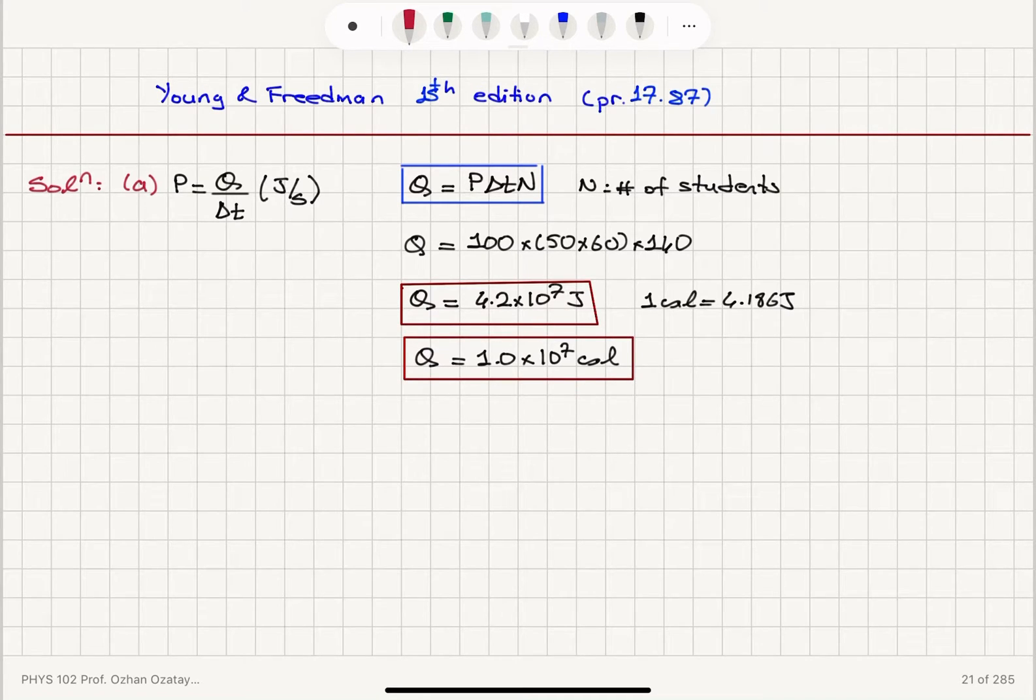In part B, we want to know how much of a temperature rise this will result in. The density of air is 1.20 kilograms per meter cube, which is its mass per volume. We will find that the mass of the air inside the room will be volume multiplied by the density of air.